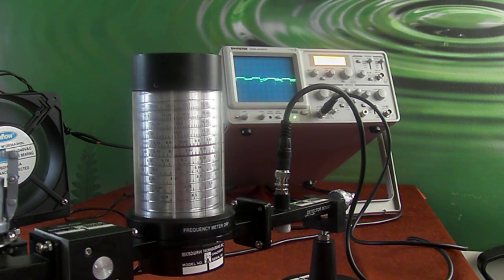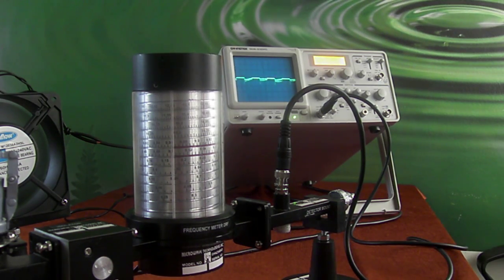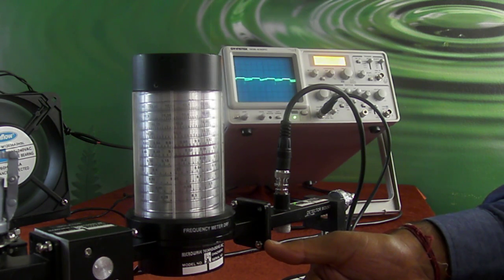This is because the waveform coming from the chrystron and isolator is completely attenuated by this frequency meter. Hence, we can calculate the frequency using the frequency meter.